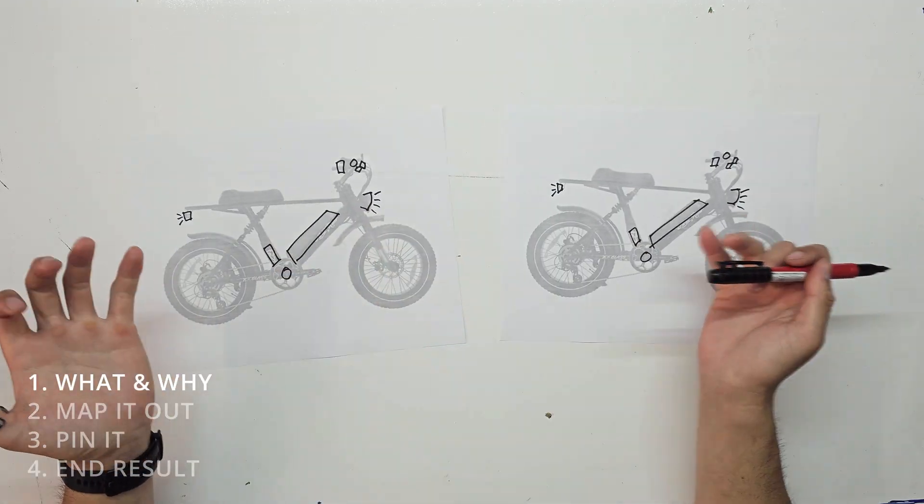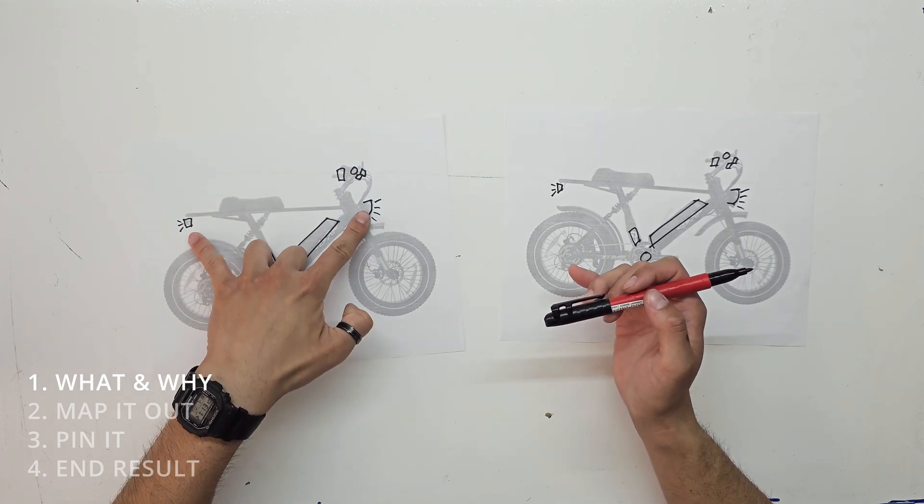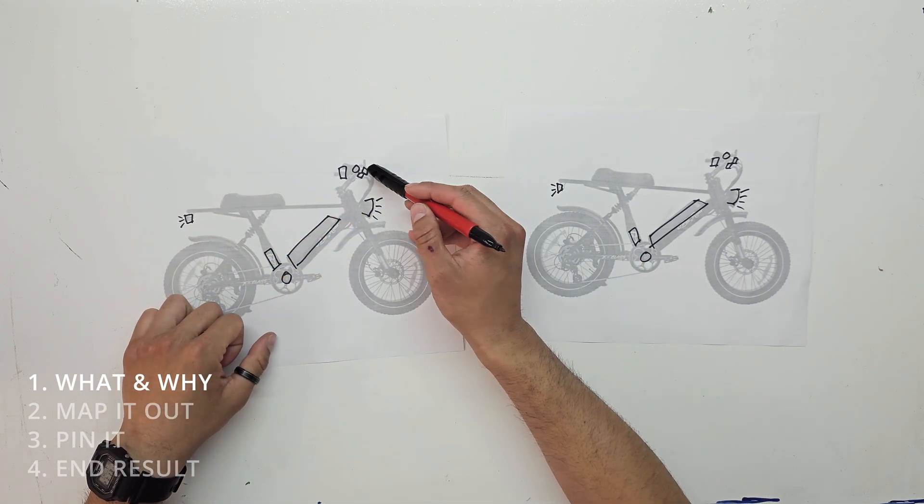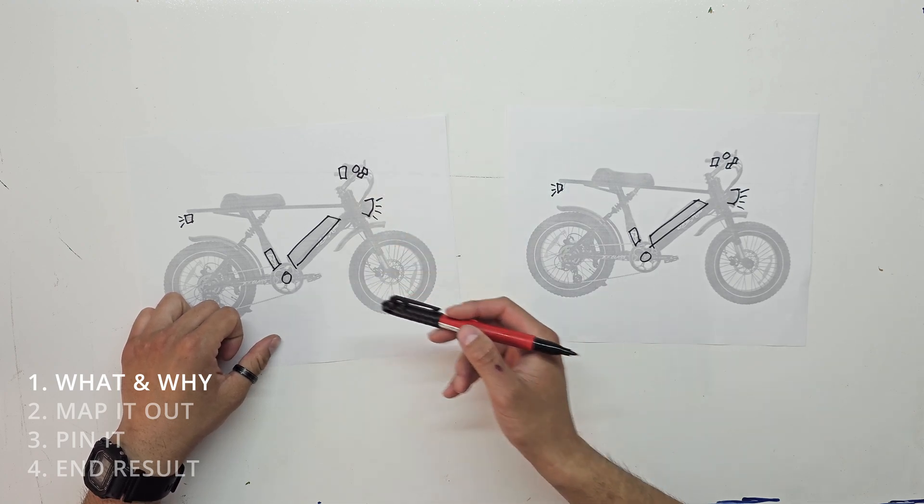eBikes generally all have the same number of parts. You have a controller, a battery, and a display. And you also have lights. You also have some inputs such as two brake inputs, a throttle, and a cadence sensor or a torque sensor.